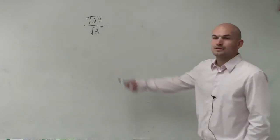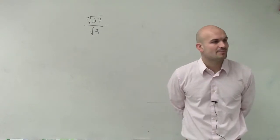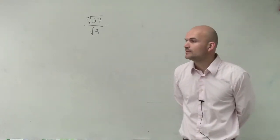Holy crap. So now, I have the fourth root of 27 divided by the square root of 3. All right?